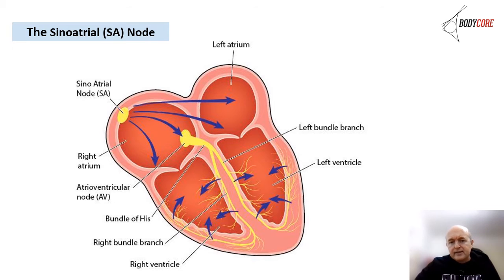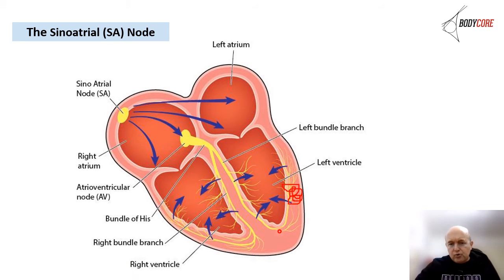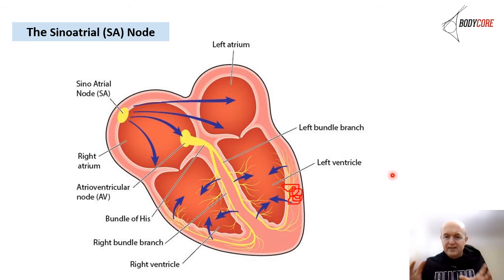Then it moves down into what's called the Purkinje network. The impulses go right around here and that contracts the ventricles to produce this pumping action.